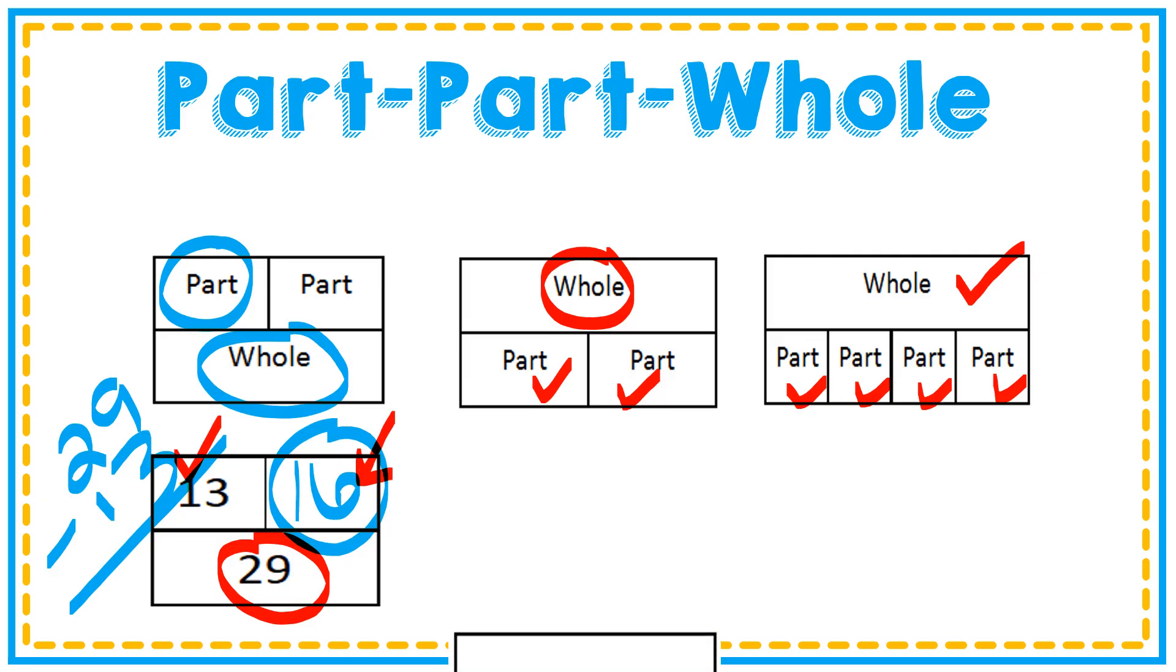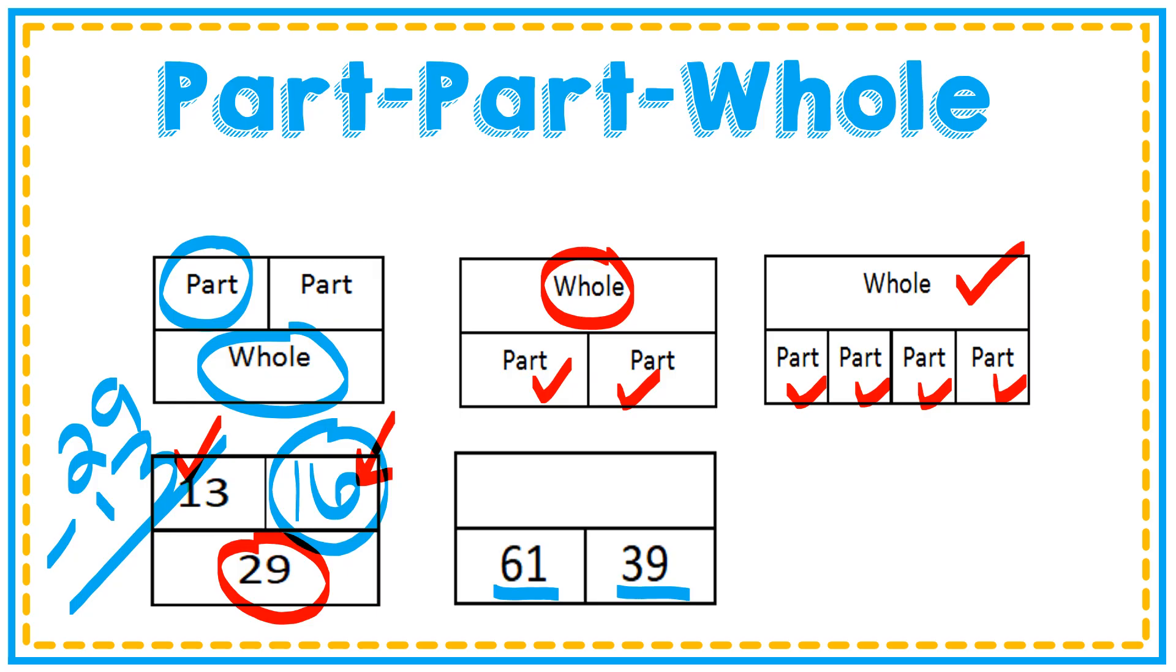Let's look at another example. 61 is a part, 39 is a part, and you can see that I'm looking for the whole. So I'm going to add 61 plus 39. And when I add those together, I get 100. That is my missing whole.